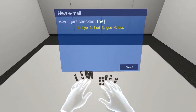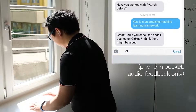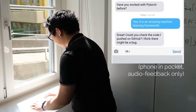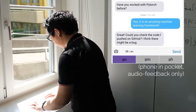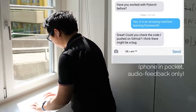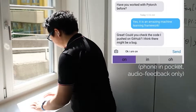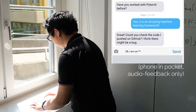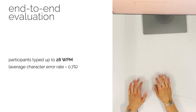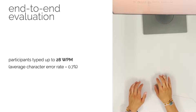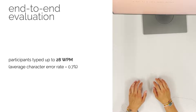so the user can look anywhere in the scene while conveniently typing on the surface. TapType doesn't need visual control, and it also works without visual feedback. Here is Shashi replying to a text with his phone in his pocket. As a preview, this is footage from our online evaluation of TapType, where participants typed up to 28 words per minute without any instructions on touch intensity.